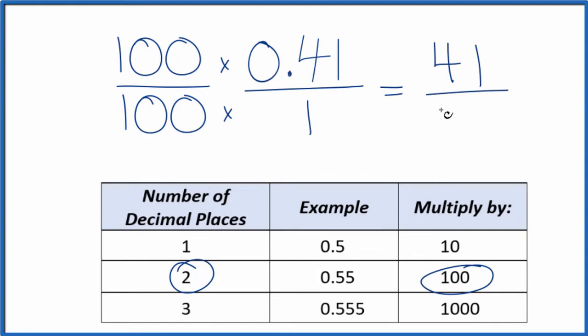100 times 1, that's 100. And now we have our fraction. 0.41, the decimal, is equal to the fraction 41 over 100. We can't reduce this any further.